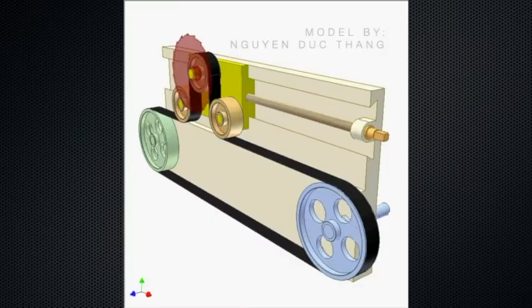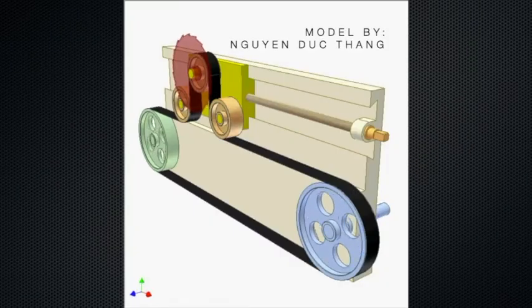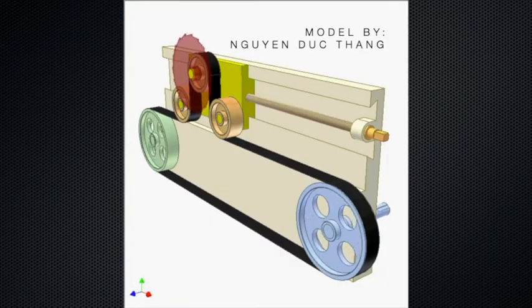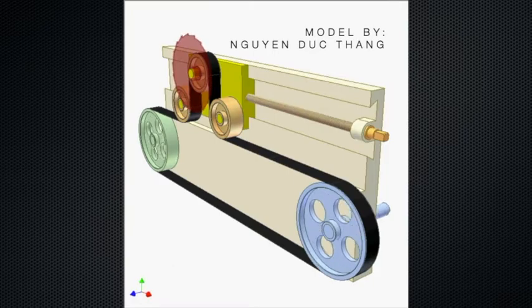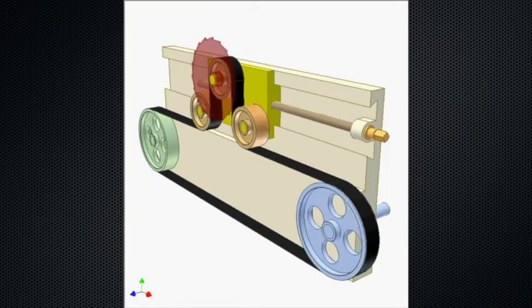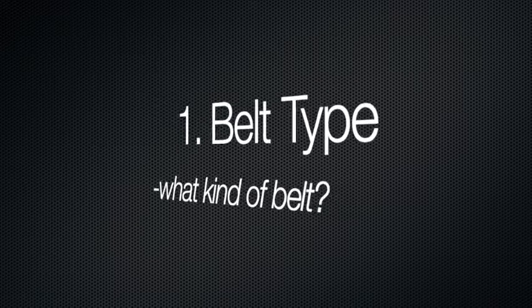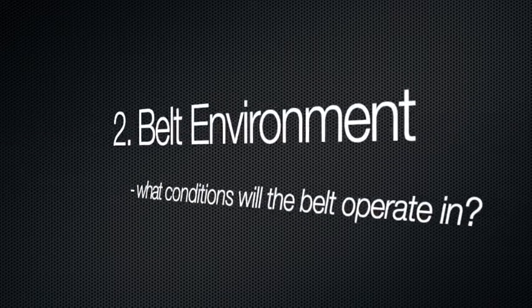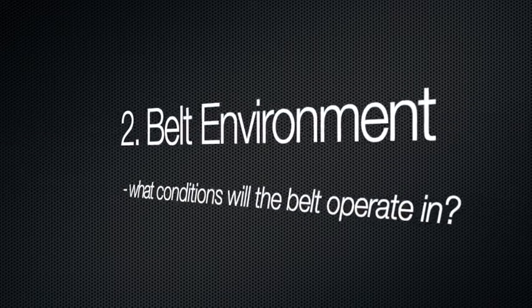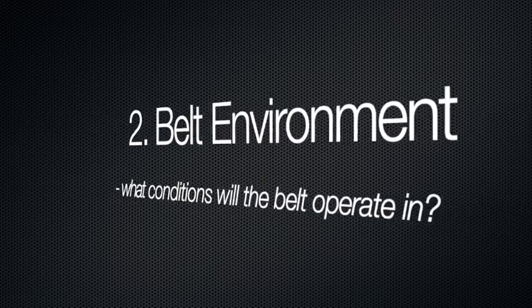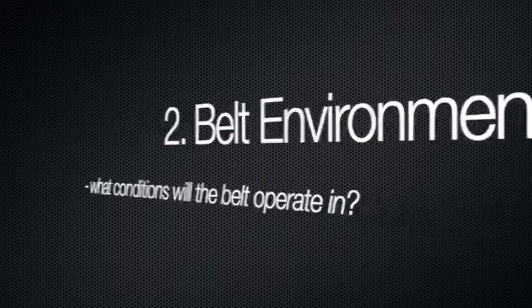Mechanical belts are elastic machine elements used to transmit movement. The two main considerations when choosing a mechanical belt system are: 1. Belt type — what kind of belt? 2. Belt environment — what conditions will the belt operate in?